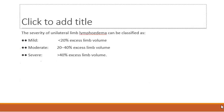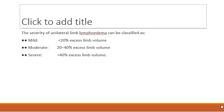In early stages, the severity of unilateral lymphedema is classified as mild, moderate, and severe based on excess limb volume. Less than 20% excess limb volume is mild; 20 to 40% is moderate; and more than 40% is severe. We classify lymphedema into two types: primary and secondary.